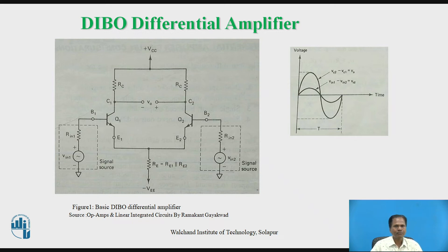The output voltage is taken at the collector of Q2 with respect to the voltage at the collector of Q1. We are assuming the emitter currents for both transistors are equal, so RE1 = RE2 = RE. The second figure shows the waveforms for the input signal, the effective input signal, and the output signal of this amplifier. The output signal is the difference between two amplified signals from the collectors of the two transistors. The effective input for the differential amplifier is the difference between the two input voltages VIN1 and VIN2.